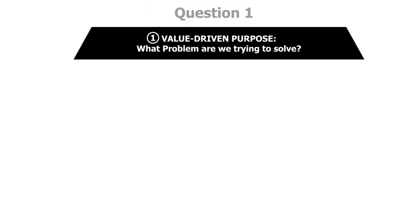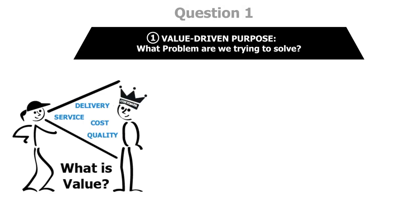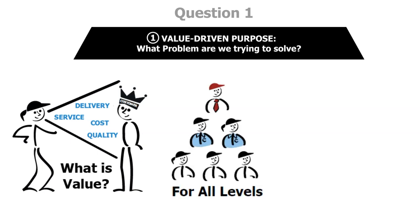Question one asks what problems are we trying to solve in relation to achieving your value-driven purpose? Lean always starts off with the customer, asking what value we need to provide. This depends on the purpose of your organization. The question what problems are we trying to solve is fractal like a snowflake. It equally applies to the whole organization, a team, or an individual.